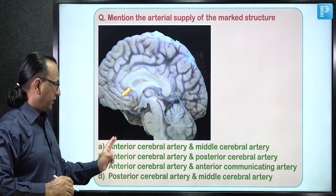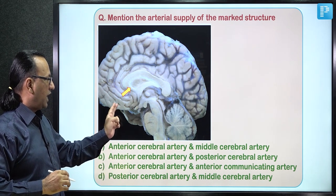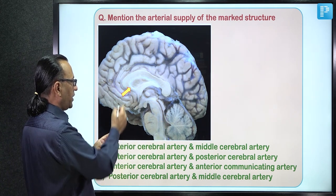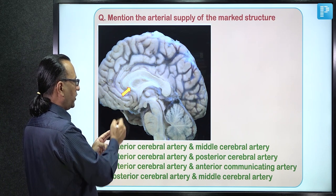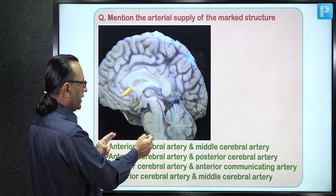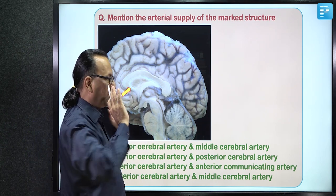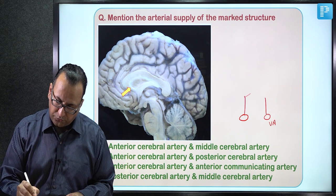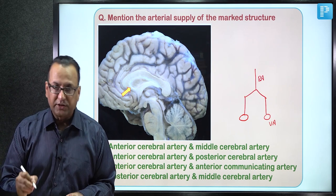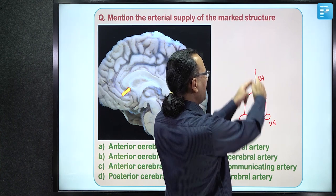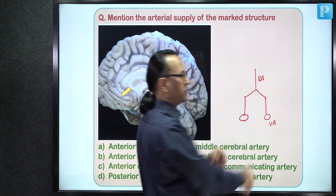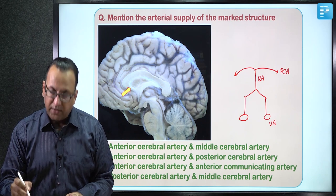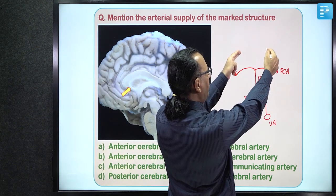The circle of Willis receives contributions from two sources: anteriorly the internal carotid arteries (right and left), and posteriorly the two vertebral arteries, which unite to form the basilar artery. The basilar artery divides into two posterior cerebral arteries contributing to the circle of Willis.